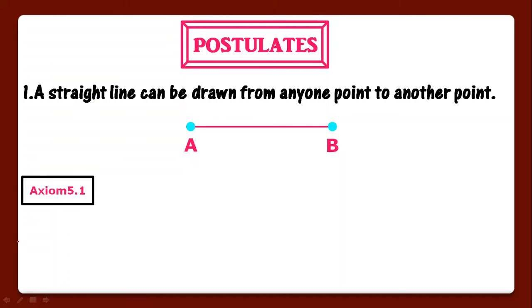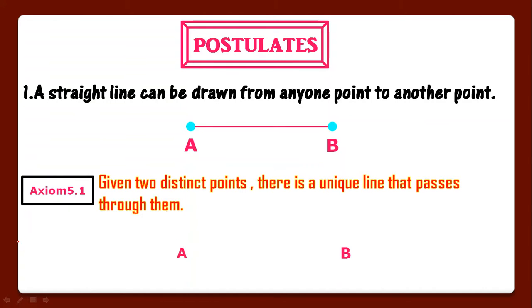Axiom 5.1 also says the same thing. Given two distinct points A and B, there is a unique line that passes through them. Two distinct points will always have one unique line passing through them. If there is a single point, then infinite lines can pass through it. But through two distinct points only one line can pass.